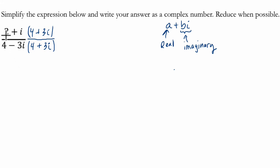So in the numerator, we'll have 2 times 4, we're going to distribute, that's 8. And then 2 times 3I, which is 6I. I times 4, which is 4I.